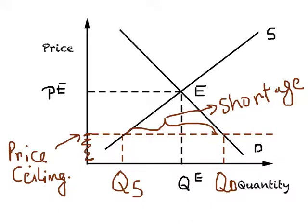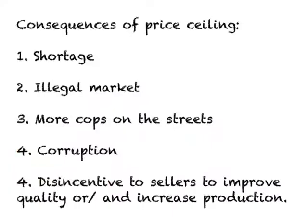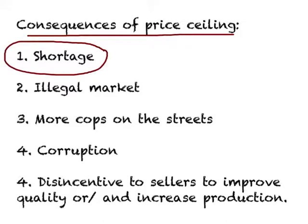Just remember this: whenever the government sets a price to protect the interests of consumers, the government believes the price charged by the market is too high. So the government steps in and sets a price ceiling, and whenever we have a price ceiling, a shortage will ensue. Now let us look at some consequences of price ceiling. The first consequence we have realized is that whenever we have a price ceiling, a shortage will emerge. And whenever there is a shortage, and you do need this good, you may start going to the illegal market or the black market.